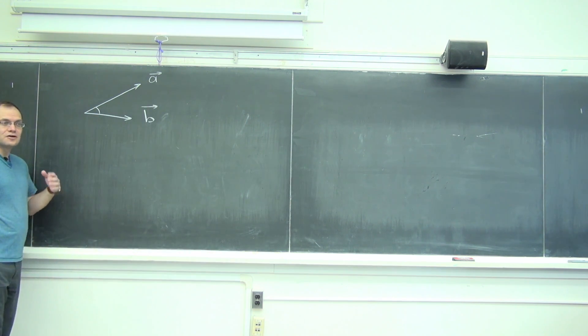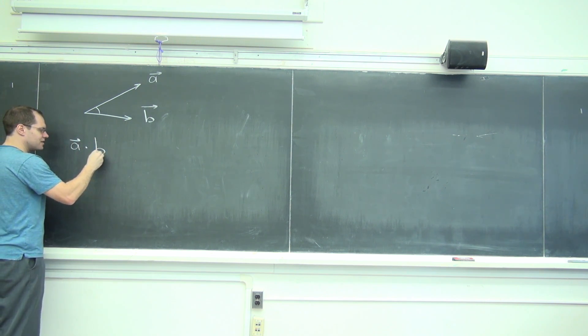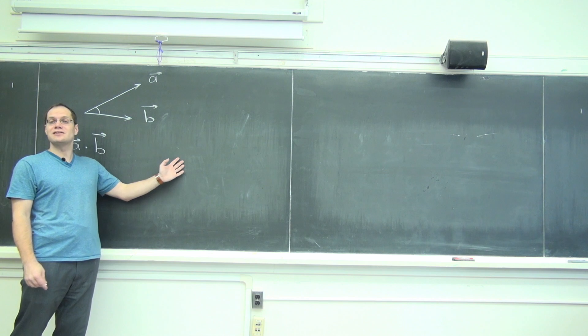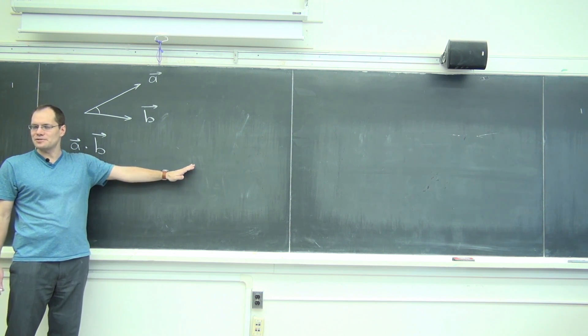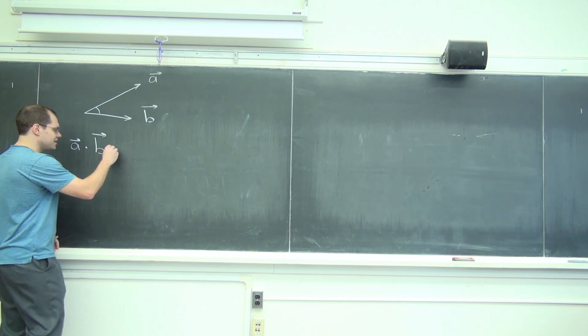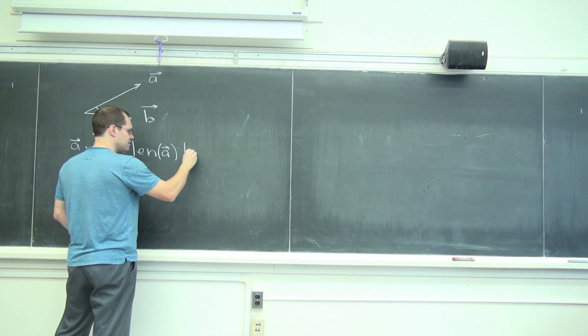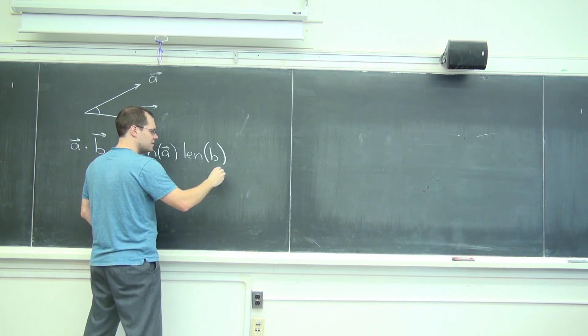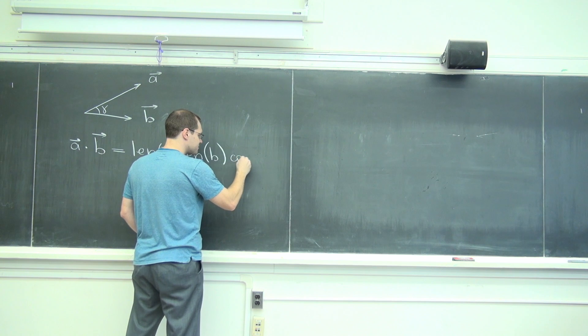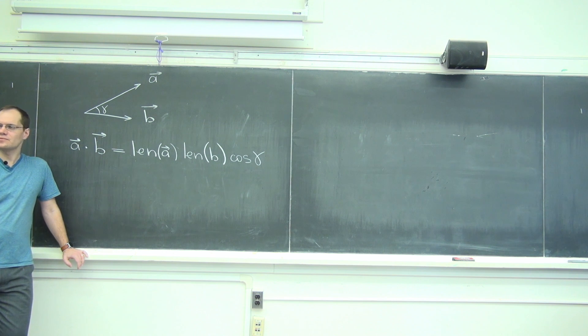So let me now write down the definition that all of you know, but I want you to take a fresh look at it. A dot B, this is called the dot product or the scalar product. It's called the dot product because you put a dot in between. It's called the scalar product because the result is a number. But I'm not yet calling it an inner product because inner product will be the linear algebra generalization of this concept.